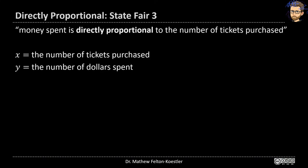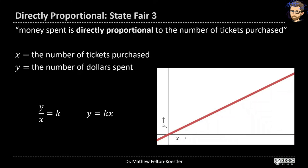Going back to our state fair example: money spent is directly proportional to number of tickets purchased. We have x as number of tickets and y as dollars spent. When two things are proportional, the ratio y over x is always a constant K — and we could also write it as x over y, which would be the reciprocal. We often rewrite this as y equals kx, where x is the input and y is the output. Graphically this is a line through the origin, where the slope depends on K — which in our context is just the price of a single ticket.